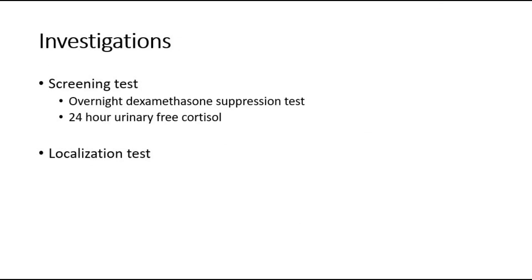To investigate for Cushing's syndrome, we divide the tests into screening tests and localization tests. For screening tests, we can do the overnight dexamethasone suppression test, which is a very good outpatient test. We give dexamethasone one milligram orally at midnight, then check the serum cortisol at 8am the following morning. Normally cortisol will be suppressed; if there is no suppression, it suggests Cushing's syndrome. Another screening test is the 24-hour urinary free cortisol to check cortisol levels.